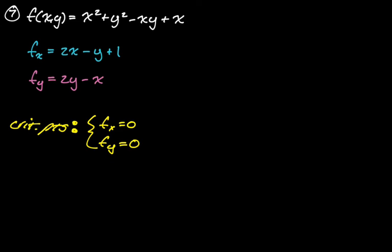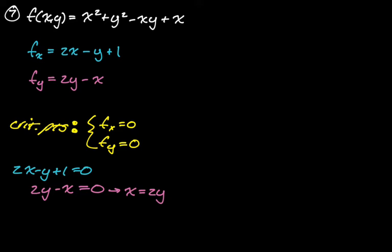They could also be undefined, but that's clearly not going to happen here. So we set partial x = 0 and partial y = 0. If you're allowed to use a calculator, you could use one at this point, but I'm going to solve this by saying x equals 2y.